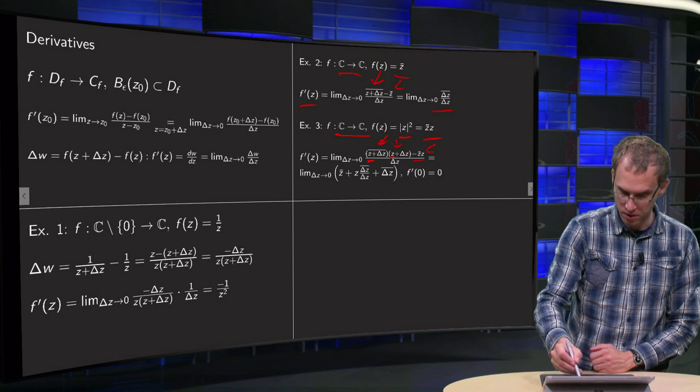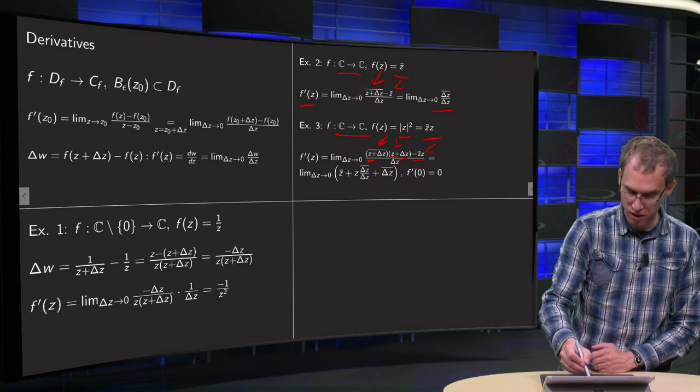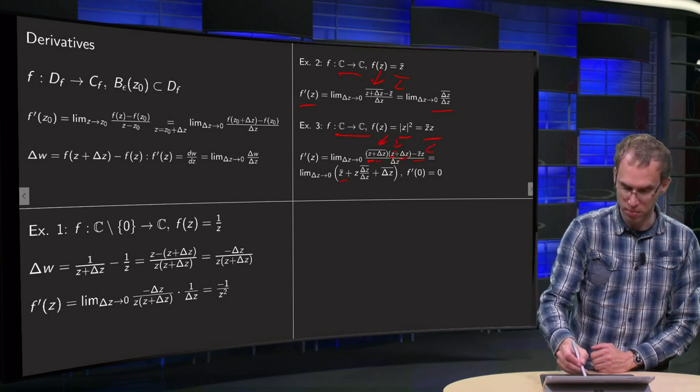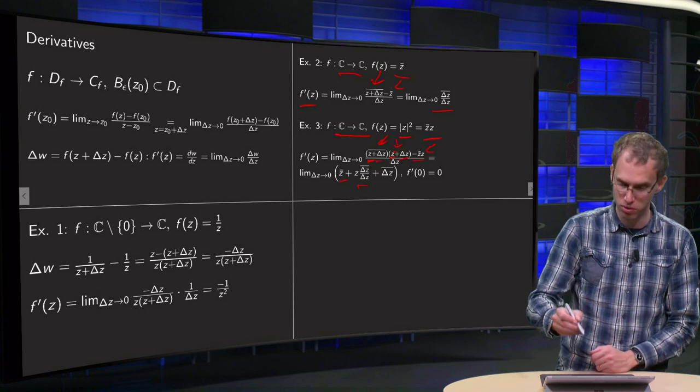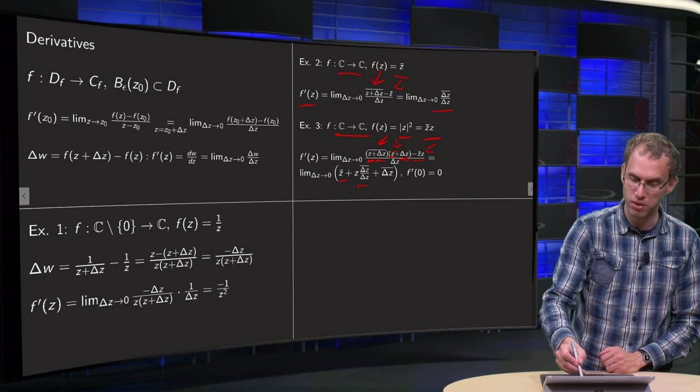We have z bar times delta z over delta z yields z bar. We have delta z bar times z and we have to divide by delta z and we have to take the limit to 0. And delta z bar times delta z divided by delta z yields delta z bar.